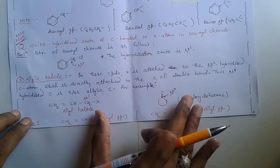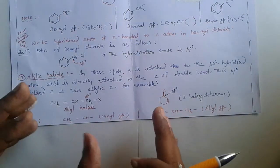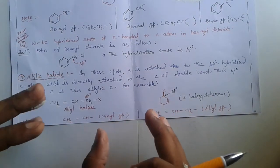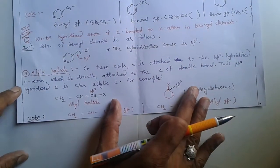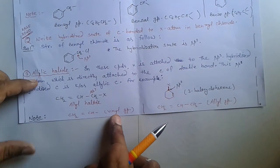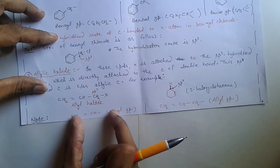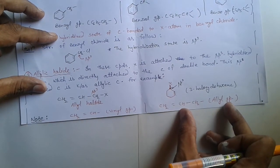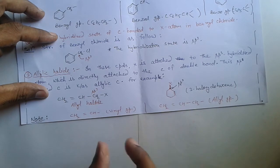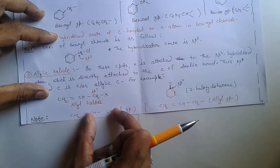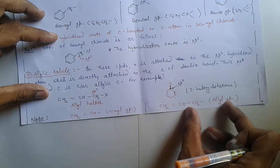Some other important groups in organic chemistry: vinyl group, and allyl group. When one methylene group is attached to a vinyl group, the vinyl group is converted into an allyl group.